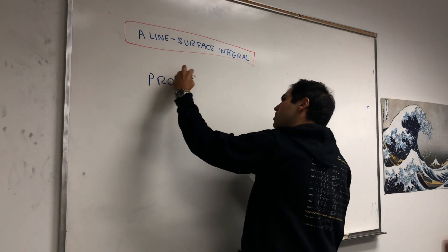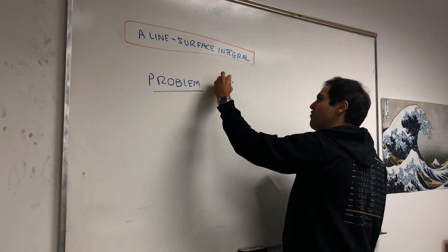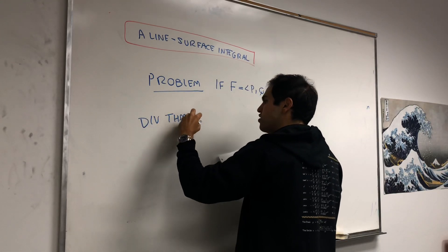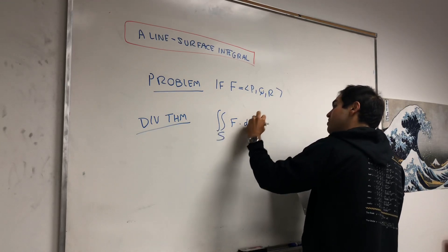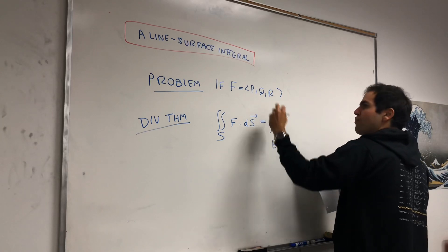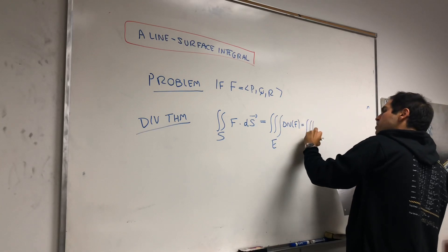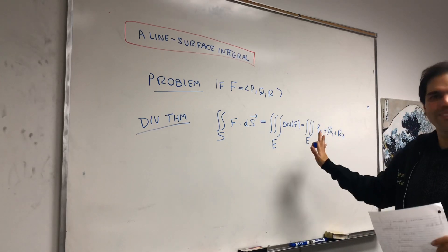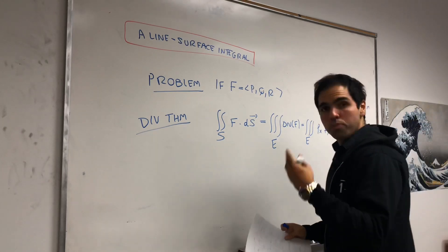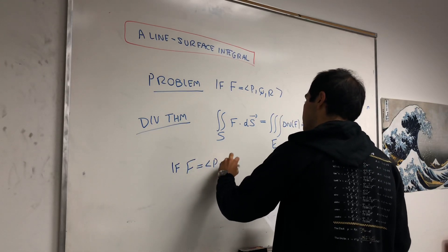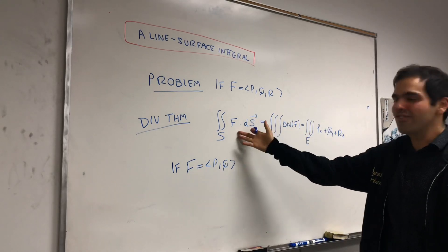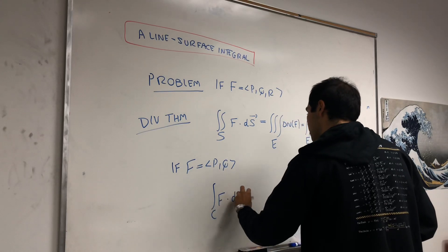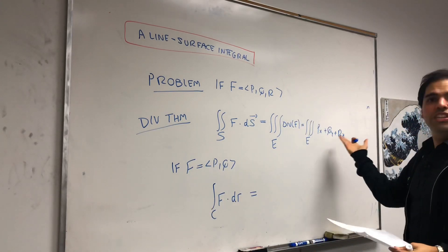Here's the main problem. In three dimensions, if you have a vector field F with three components, the divergence theorem says the surface integral of F·dS equals the triple integral of the divergence, which becomes the triple integral of P_x + Q_y + R_z dx dy dz. That's just the regular divergence theorem. Now, suppose we're in two dimensions, so F = (P, Q). In class I noted that the surface integral is a generalization of a line integral, so the 2D variant would be a line integral.